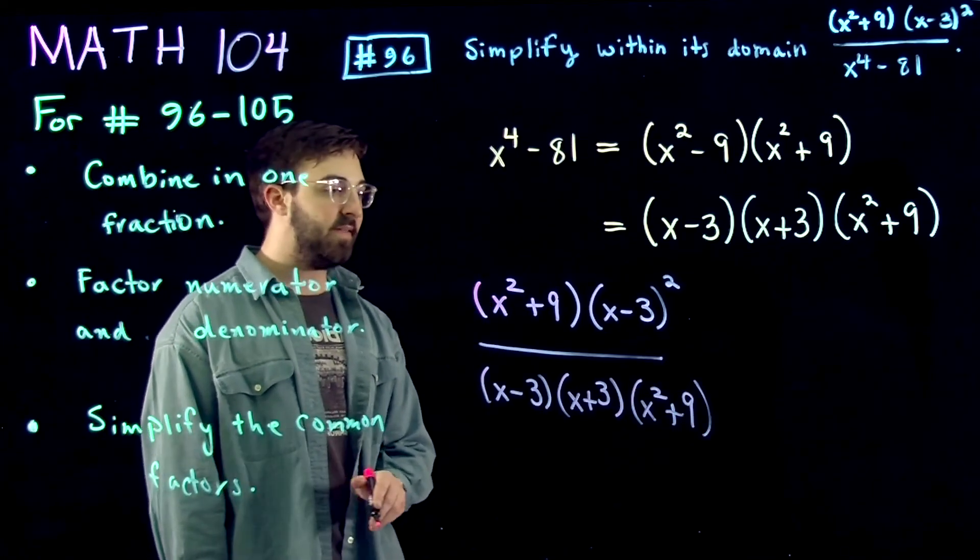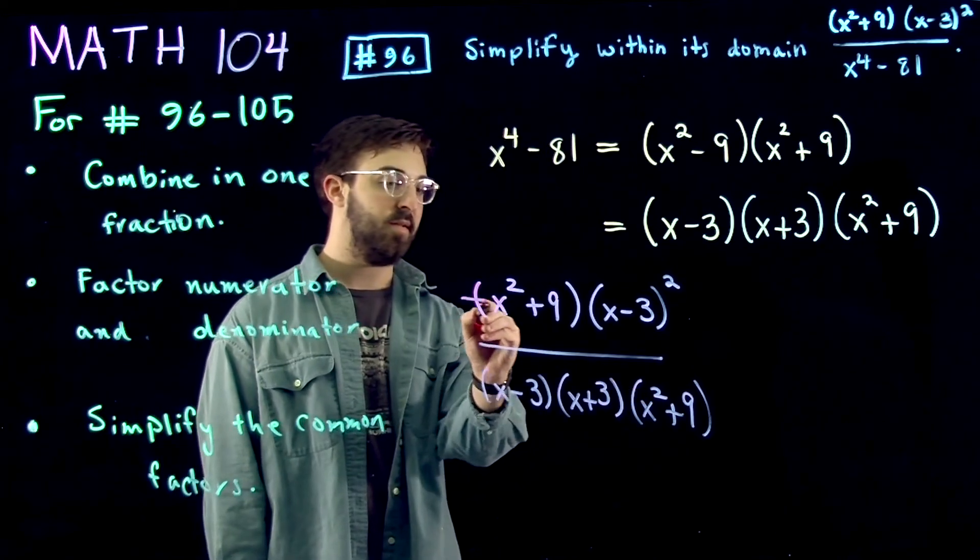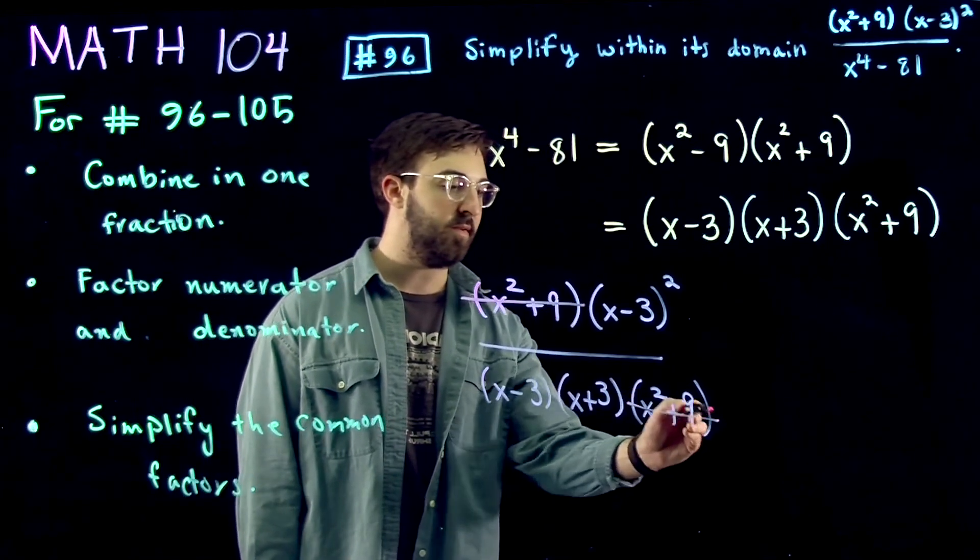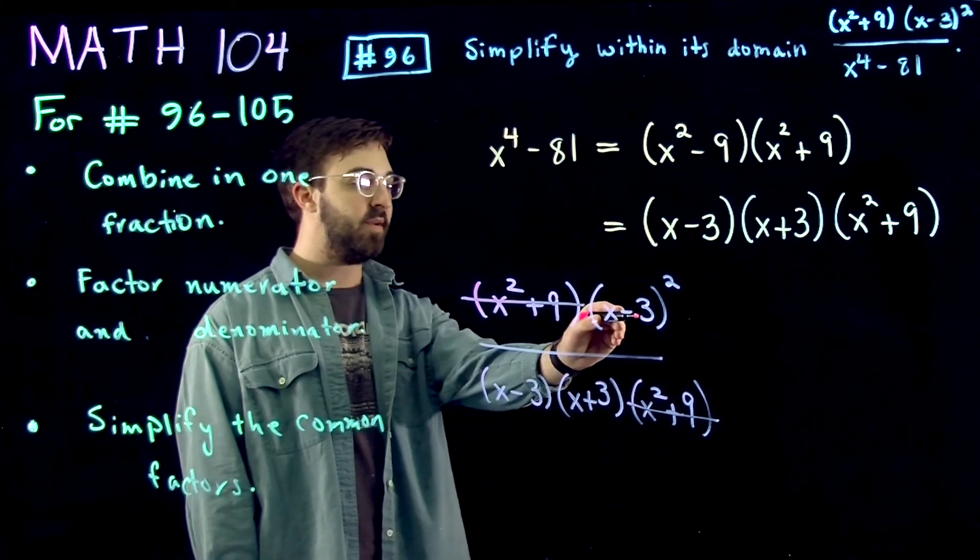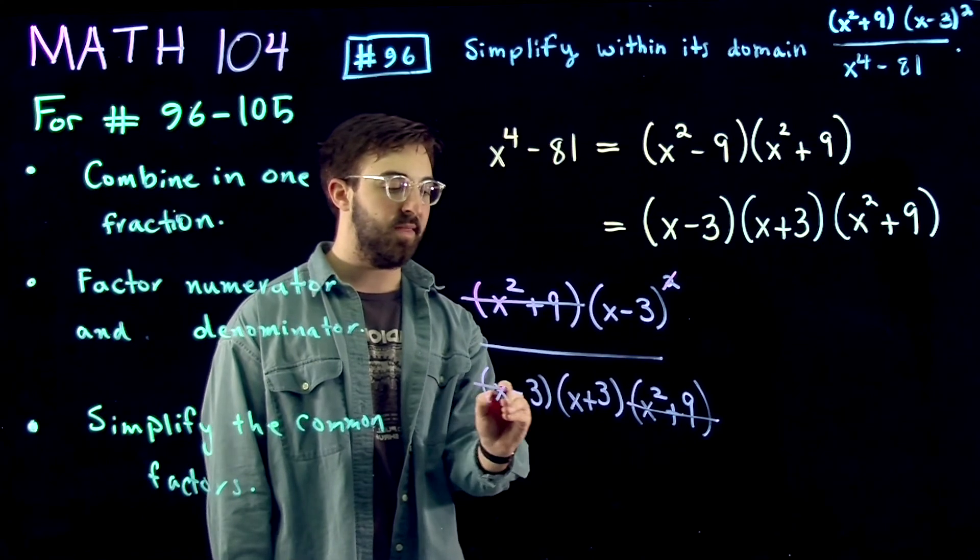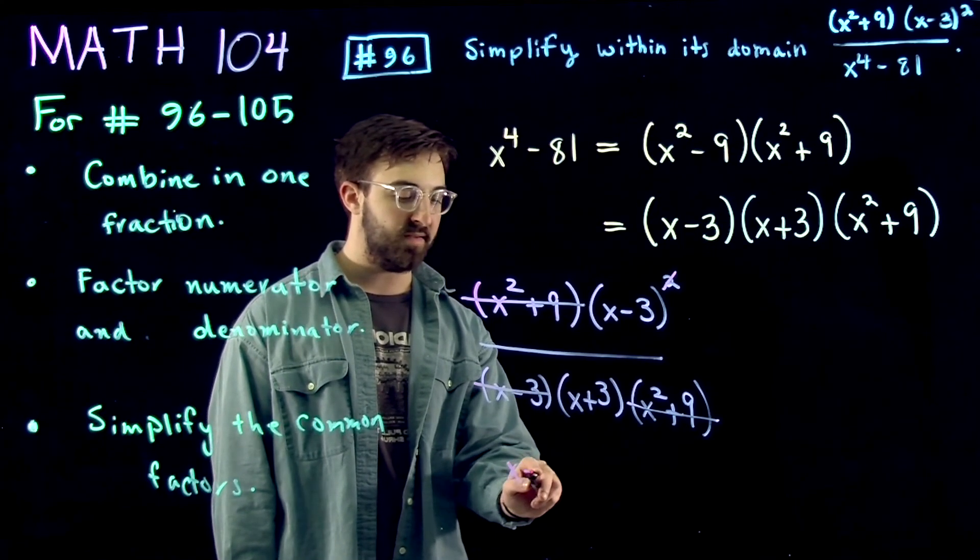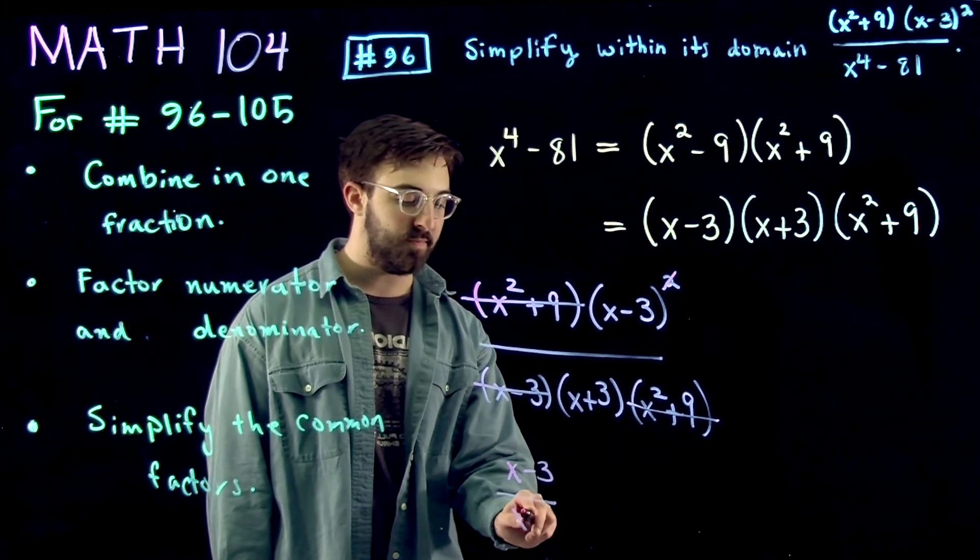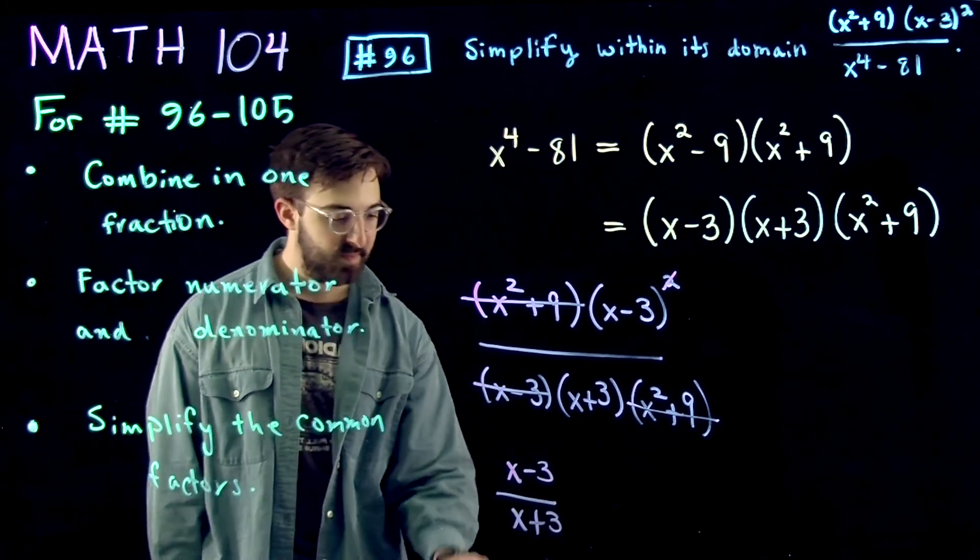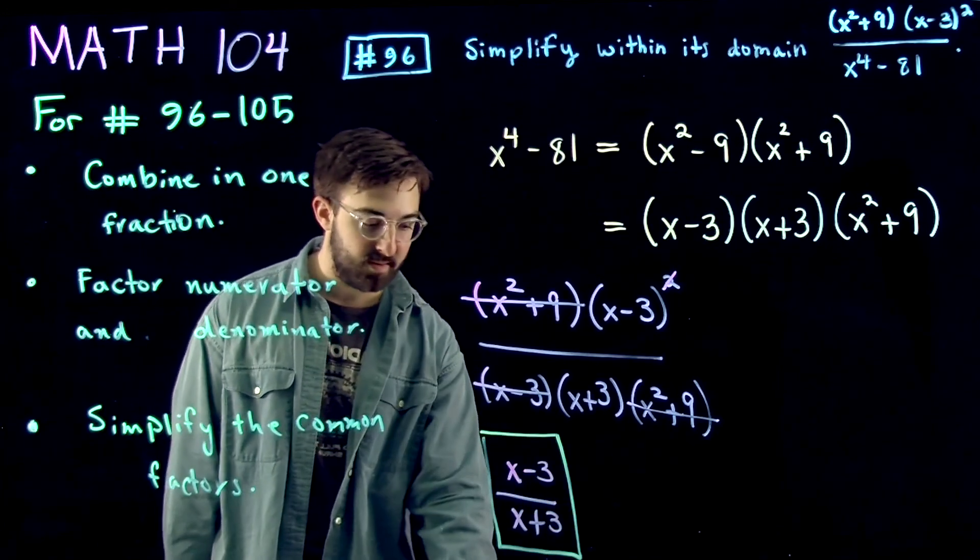Now we can see here that the x squared plus 9 and x squared plus 9 will cancel. So we cancel these two. And x minus 3 squared and x minus 3, we can cancel one factor here with this factor here. And then all said and done, we wind up with x minus 3 over x plus 3. This is the final answer, and this is how you will put it in the gateway exam.